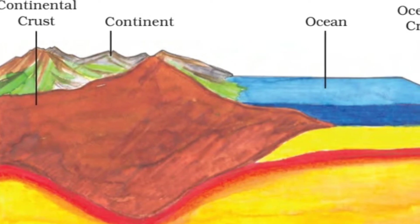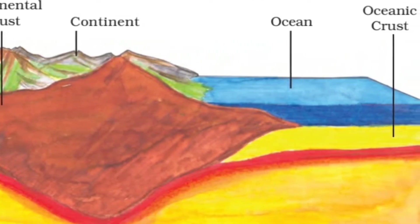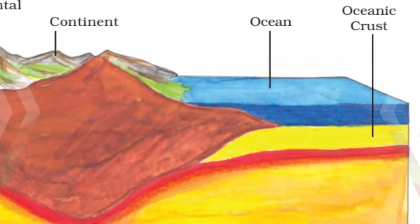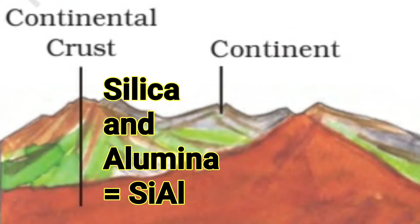The crust is the thinnest layer of all the layers, and it is further divided into two parts: continental crust and oceanic crust. Continental crust is about 35 km deep inside, and the main mineral constituents of the continental mass are silica and alumina. It is thus called SIAL — Si is taken from silica and Al is taken from alumina.